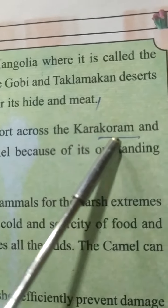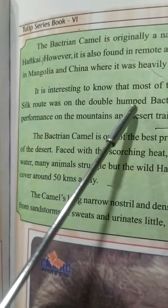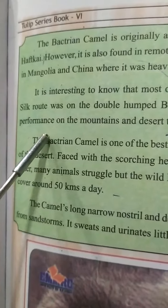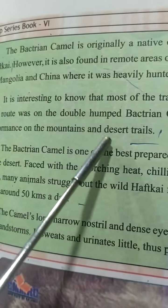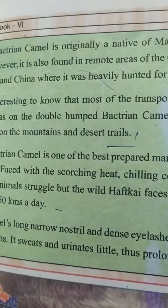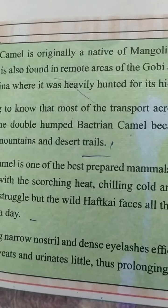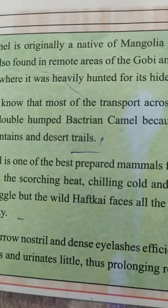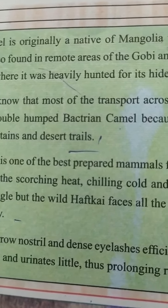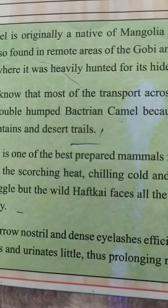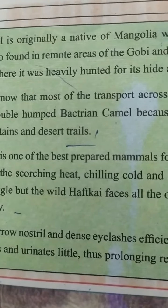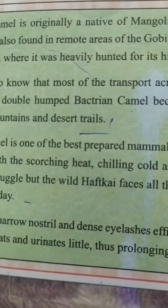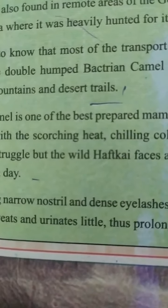It is interesting to know that most of the transport across the Karakoram and Silk Route was on the double-humped Bactrian Camel, because of its outstanding performance on the mountains and desert trails. Karakoram aur Silk Route mein samaan ek jagah se doosri jagah le jaane ke liye isi double-humped Bactrian Camel ka istemaal kiya jata hai kyunki is oont ki performance paharon aur raikistan mein bahut achi hai.